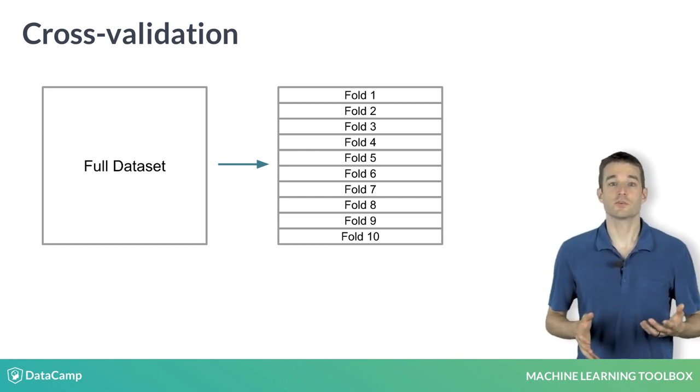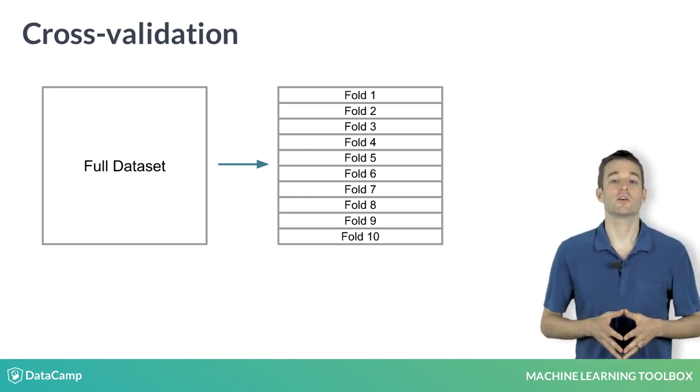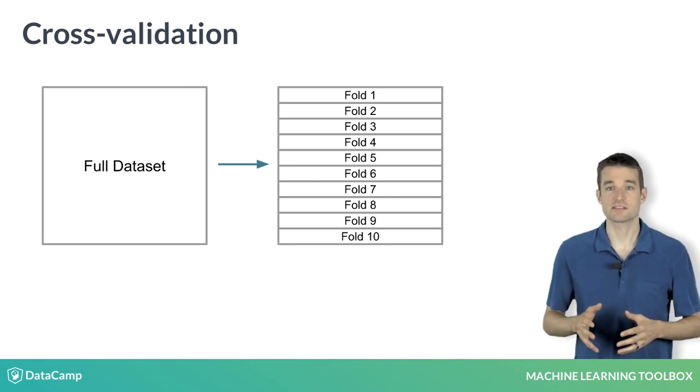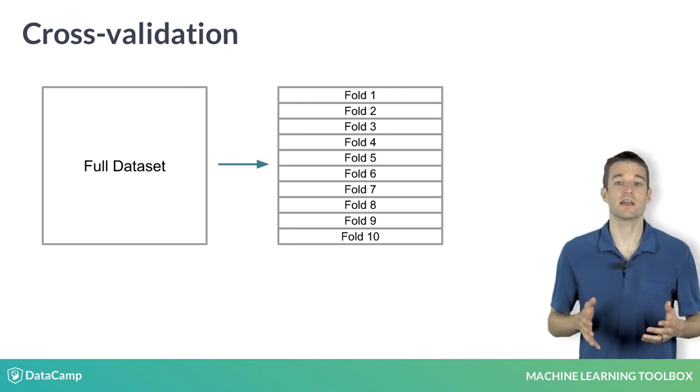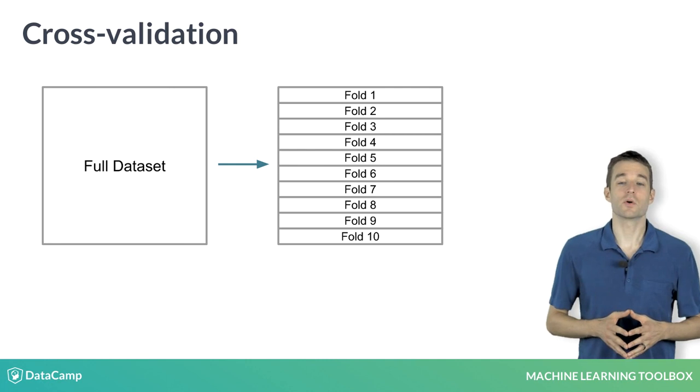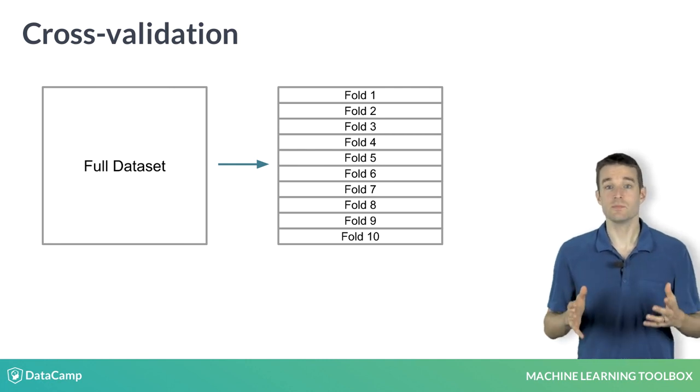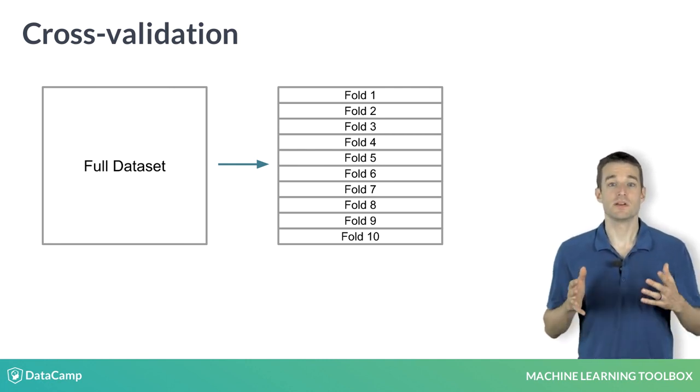We create these folds in such a way that each point in our data set occurs in exactly one test set. This gives us 10 test sets, and better yet, means that every single point in our data set occurs exactly once. In other words, we get a test set that is the same size as our training set, but is composed of out-of-sample predictions.